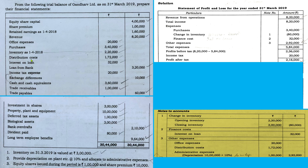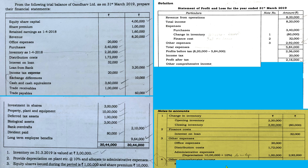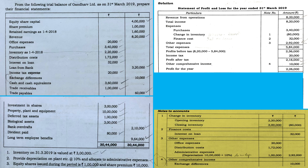Now make sure whether there are any more items to be included under this statement. You can see one item you are seeing for the first time: exchange differences. Exchange differences come under other comprehensive income. So let us include it under the other comprehensive income head — exchange differences: 10,000. Now we have included almost all the items and we can find the total comprehensive income for the year: 2,26,000. So we have completed the statement of profit and loss.